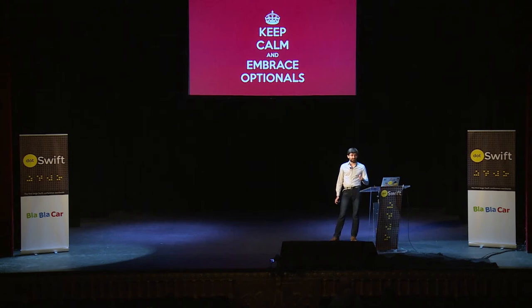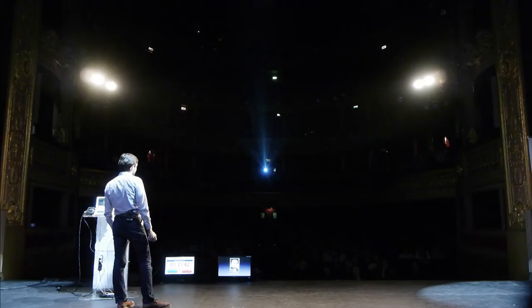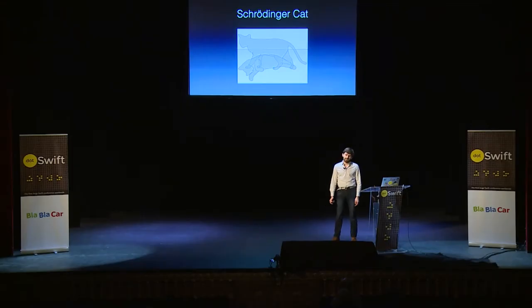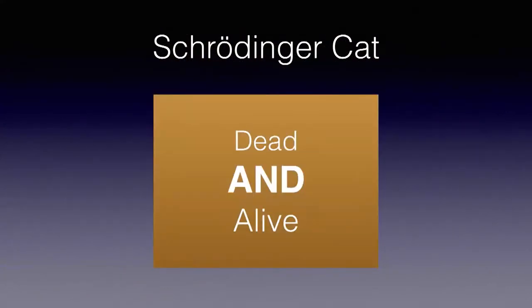To understand optionals fully, we first need to understand quantum mechanics. This guy is Erwin Schrödinger. He is a physicist, and in order to illustrate a paradox with particles — whereby a particle can be in two states at the same time — he came up with the Schrödinger cat. The cat is in a box with some poison, and might be either alive or dead. Since you cannot see inside the box, you should consider the cat as both dead and alive. With optionals, it's the same thing.